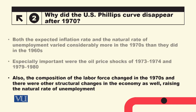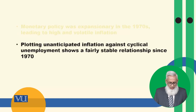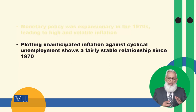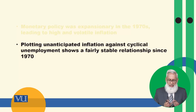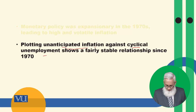Changes in the composition of the labor force — for example, the rise in female participation rate in the 1970s — led to high and volatile inflation. Plotting unanticipated inflation against cyclical unemployment, rather than total unemployment, shows a relatively stable relationship since the 1970s. If you use unanticipated inflation and cyclical unemployment, you will observe a clearer graph.